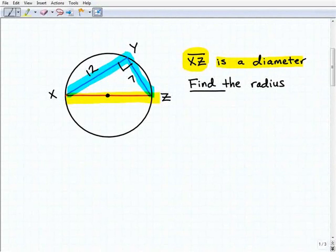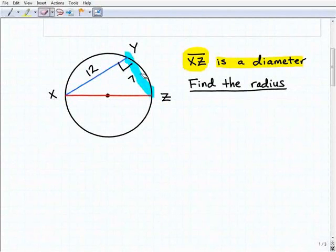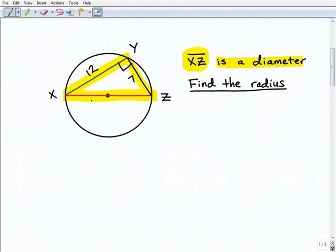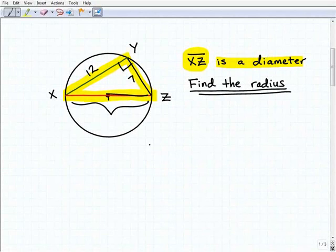We're asked to find the radius of this particular circle. To do that, I'm going to look at this situation as a right triangle. You have this right triangle, and what I'm looking for first is the hypotenuse, which is XZ. When I get the hypotenuse, I'll divide it by two, and that'll give me the radius, and that'll answer the question. So let's use the Pythagorean theorem to solve for the hypotenuse first.